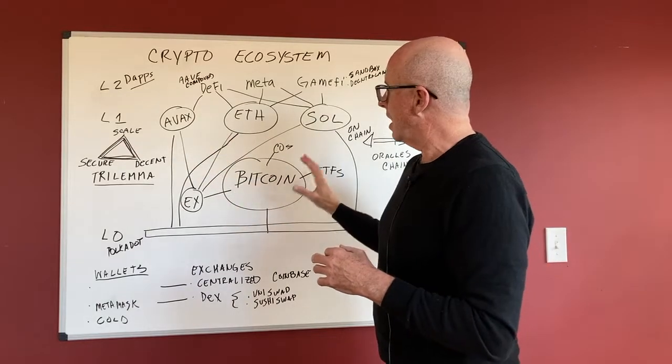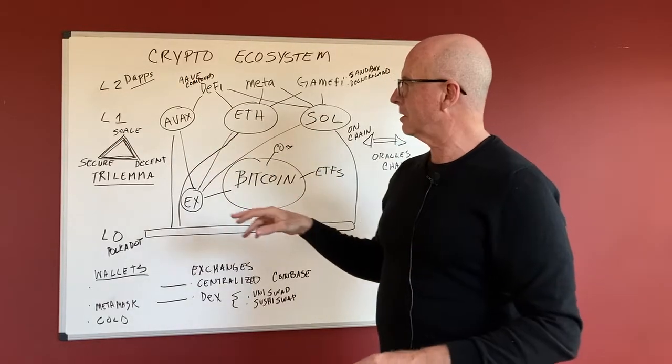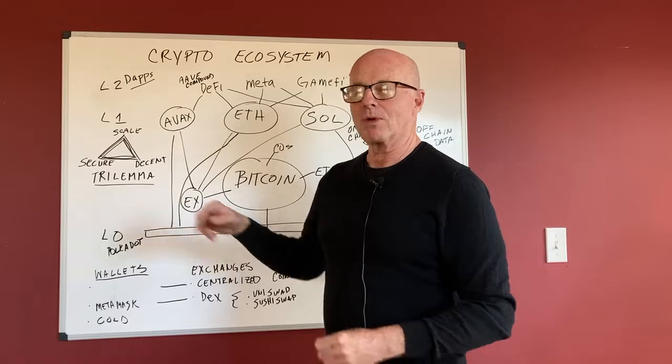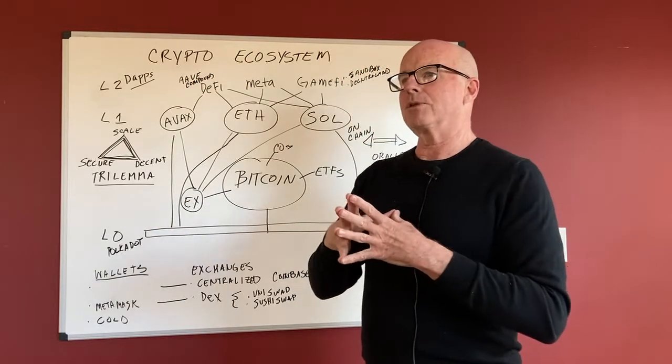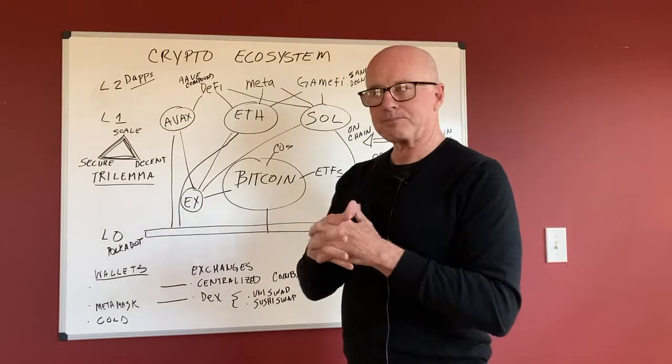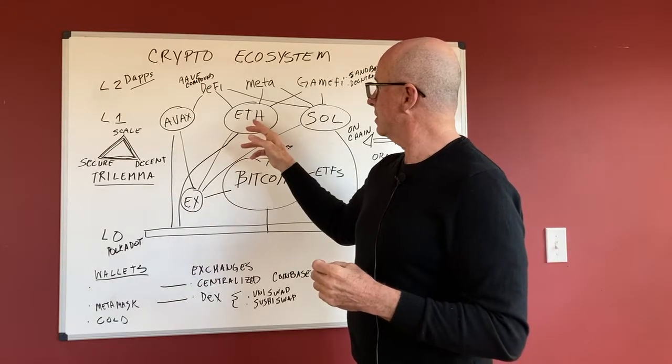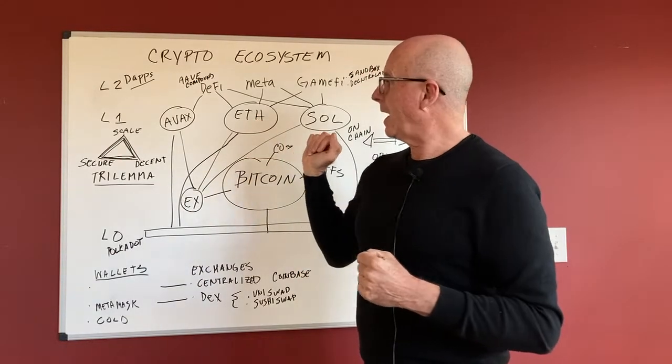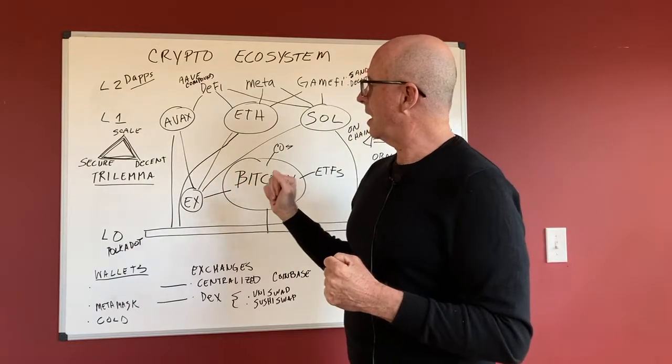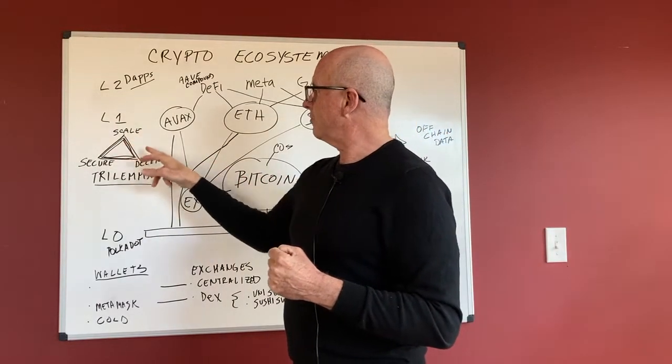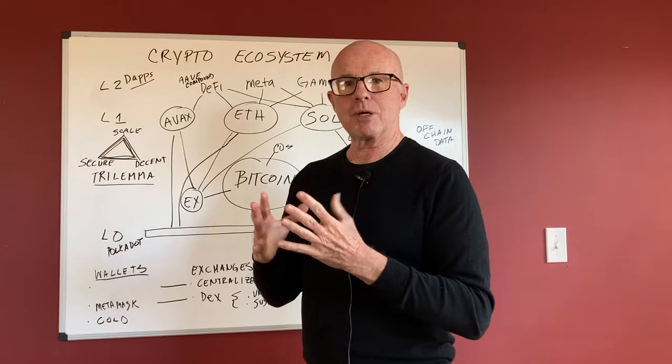And the way that these things operate, the limiting factors are something called the trilemma. And the trilemma was something posed by Vitalik Buterin, the guy who invented Ethereum. And it basically is that there's three different things to optimize for.